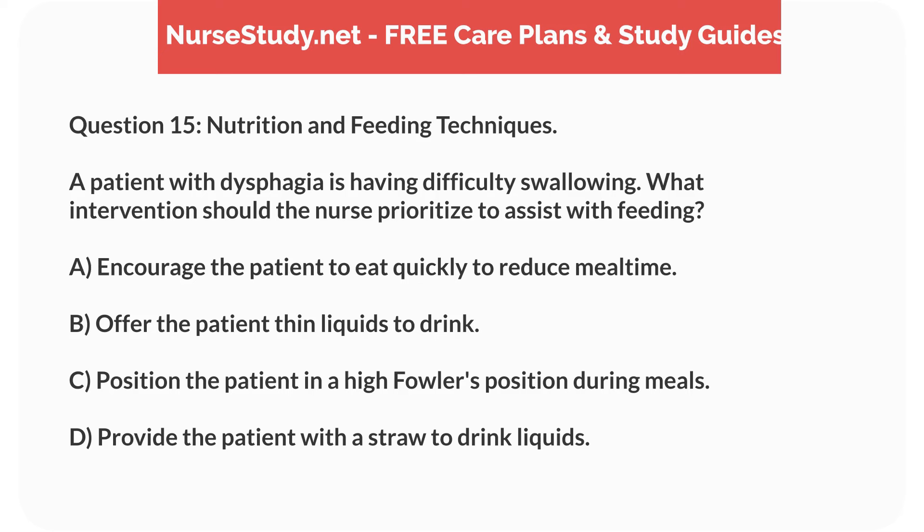Question 15. Nutrition and Feeding Techniques. A patient with dysphagia is having difficulty swallowing. What intervention should the nurse prioritize to assist with feeding? A. Encourage the patient to eat quickly to reduce mealtime. B. Offer the patient thin liquids to drink. C. Position the patient in a high-Fowler's position during meals. D. Provide the patient with a straw to drink liquids.